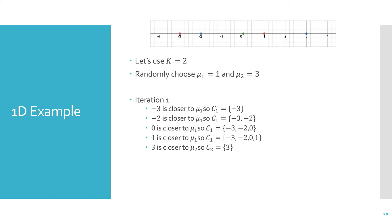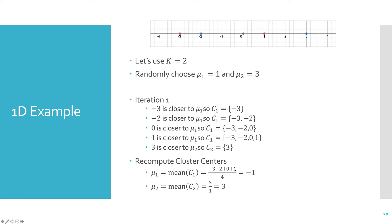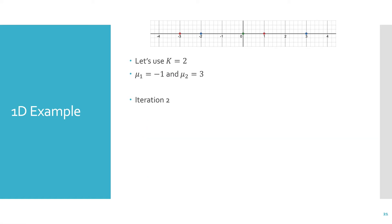We've completed constructing the clusters based on distance, and now we recompute the cluster centers by taking the mean of each cluster. We add all points in cluster 1 together and divide by the number of points, which is 4, and we get negative 1. For the second cluster there's only one point, so 3 divided by 1 is 3. Now we have updated cluster centers and can move on to iteration 2.